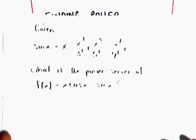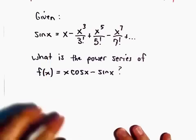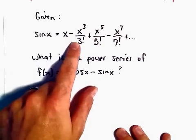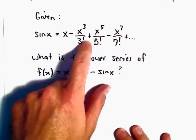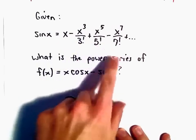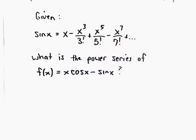In this example, we're given the series representation for sine x as x minus x to the third over 3 factorial plus x to the fifth over 5 factorial minus x to the seventh over 7 factorial, etc.